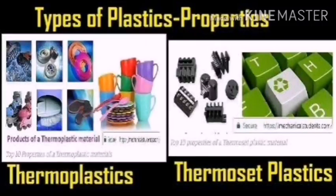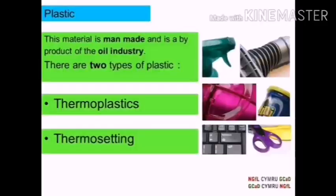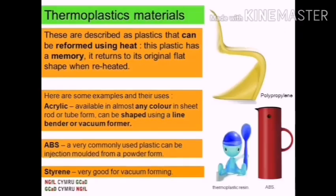Basically, plastics are of two types: thermoplastic and thermosetting plastic. The material is manmade and is a by-product of the oil industry. Thermoplastic materials are described as plastics that can be reformed using heat. This plastic has a memory — it returns to its original shape when reheated. Plastics which easily get deformed on heating and can be bent easily are known as thermoplastic.